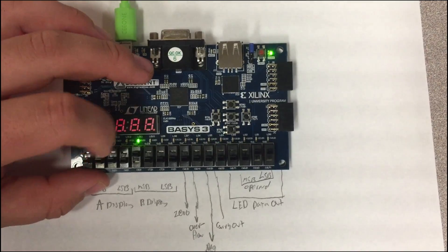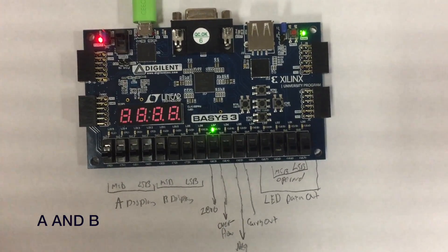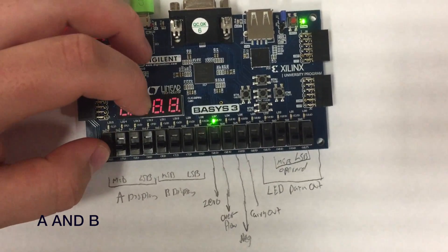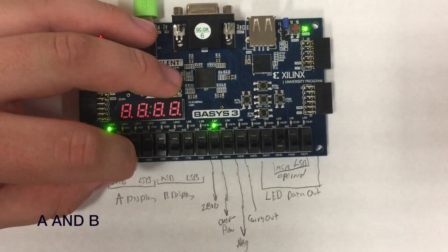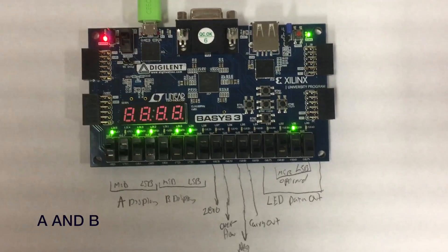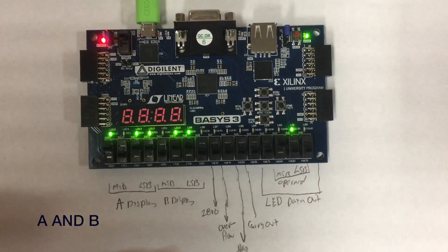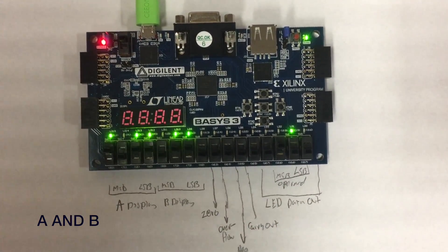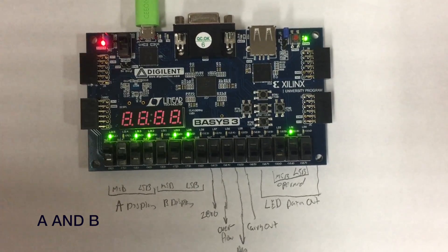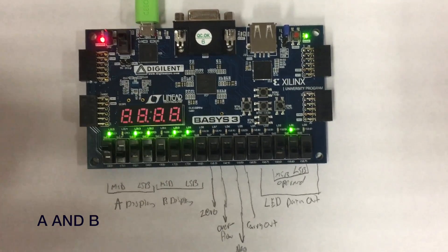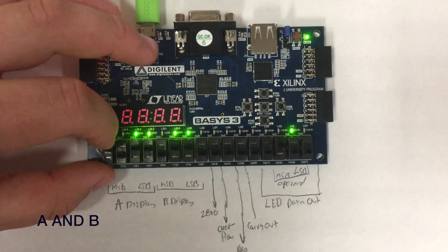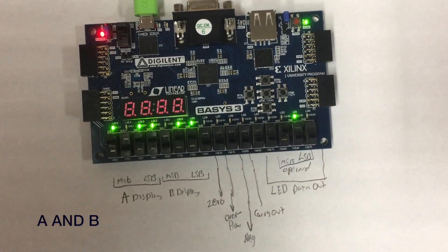For our next operand we'll be doing 1 0 0, which is a AND b. We will be using a is 1 0 1 1 and b will be 0 1 1 0. This will output 0 0 1 0 on our operand, because it will only output a 1 if both a and b have a 1 in a specific bit.